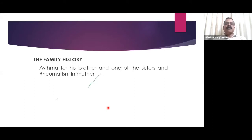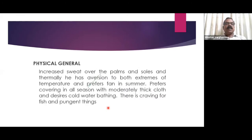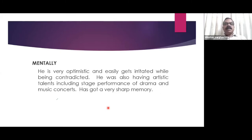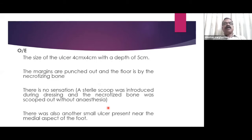Family history: asthma in a brother and a sister, and rheumatism in the mother. Physical generals: increased sweat over the palms and soles; aversion to both extremes of temperature; prefers a fan in summer and moderately thick covering in all seasons; desires cold water bathing; craving for fish and pungent things. Mentally he was very optimistic, easily irritated by contradiction, with artistic talent including drama and music, and a sharp memory.